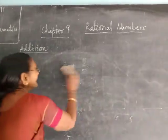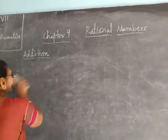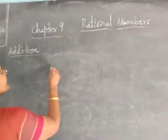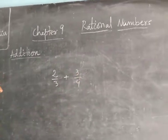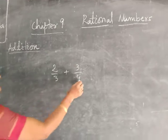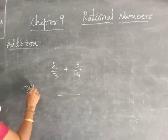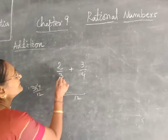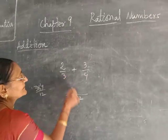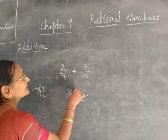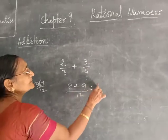Suppose the denominators are different. Then what will you do? You will take the LCM. The denominators are 3 and 4, so LCM is 3 into 4 equals 12. Then divide the LCM by each denominator: 12 divided by 3 gives 4, multiply 4 into 2 to get 8. 12 divided by 4 gives 3, multiply 3 into 3 to get 9. So it comes 8 plus 9 over 12, which is 17 by 12.